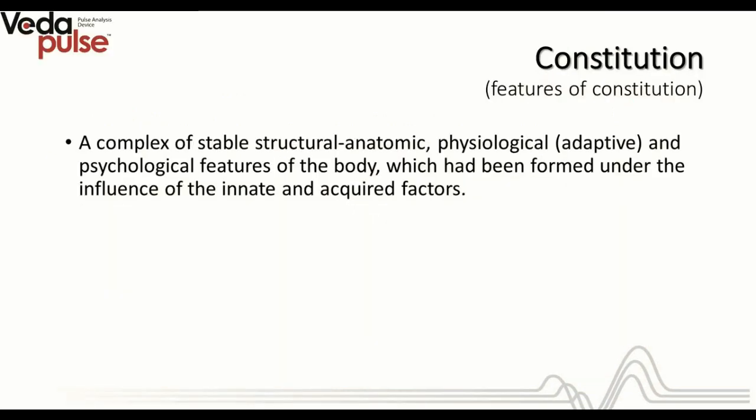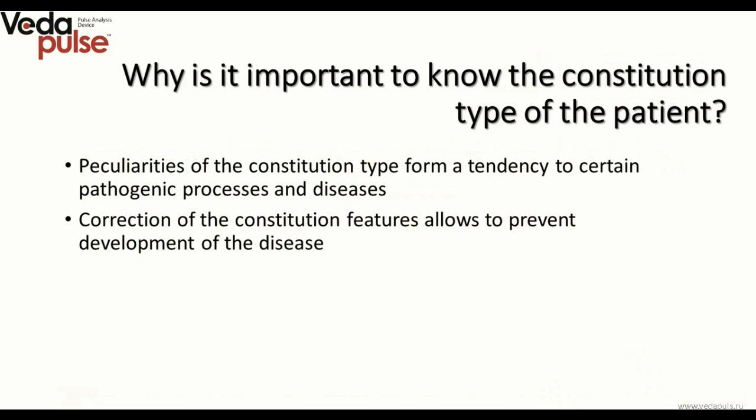You are about to learn how to identify the syndrome, what consequences it may lead to, and how we can prevent development of cancer. Traditionally we go through some basic notions. Constitution is a complex of stable, structural, anatomic, physiological and psychological features of the person which have been formed under the influence of innate and acquired factors. Each type of constitution has its own weak points, and peculiarities of the constitution type form a tendency to certain pathological processes and diseases. Knowing predispositions to diseases, the specialist can perform preventive treatment, which is the highest level of the art of healing.